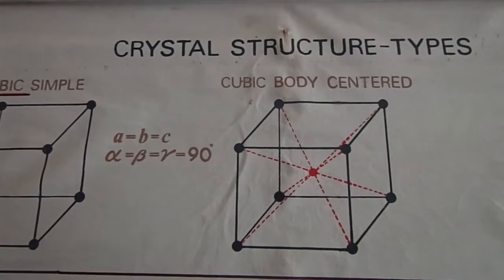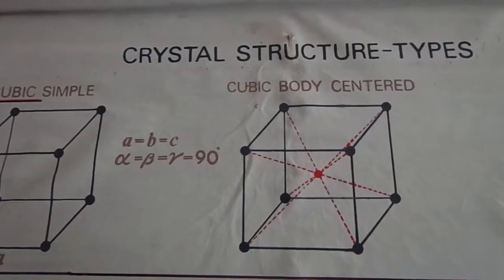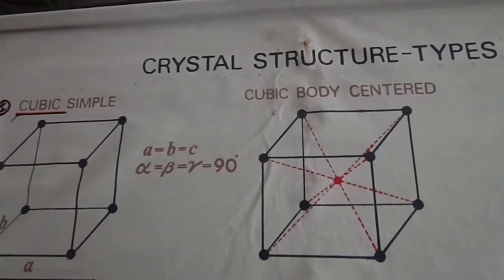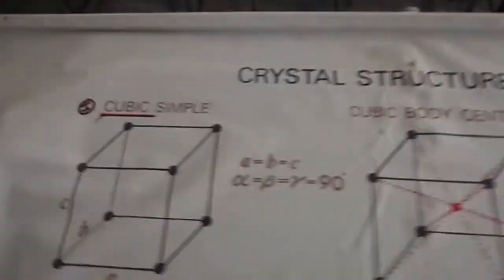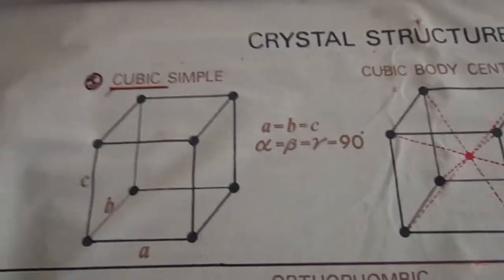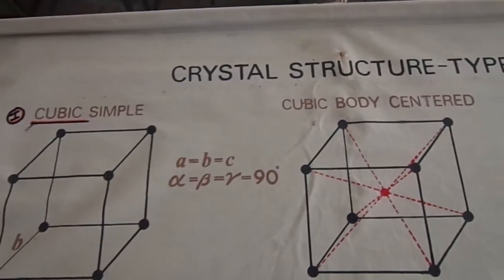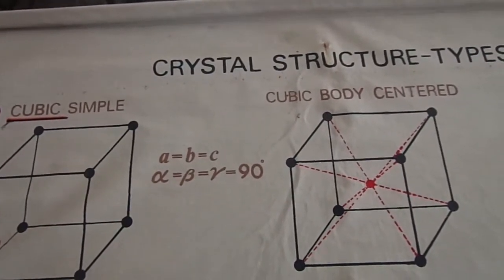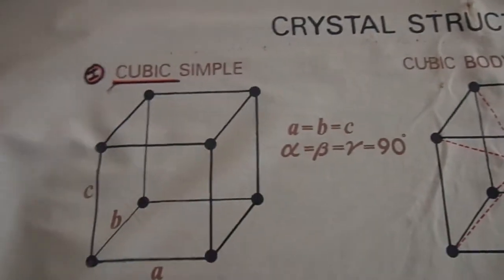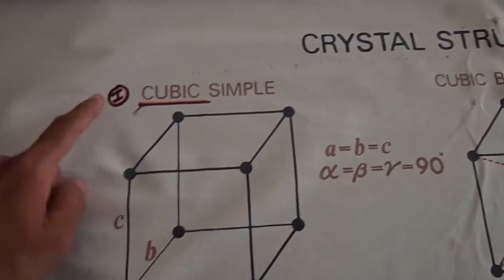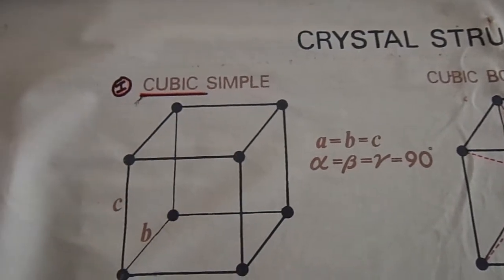Hi, in this video we are about to see the 14 crystal types called the Bravais lattice system. First let us see some 7 crystal systems that consist of 14 crystals. The 7 crystal systems are marked using Roman letters. The first Roman numeral represents the cubic system.